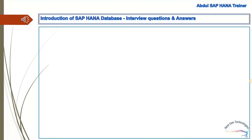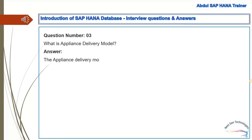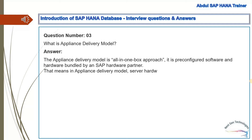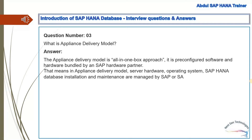Question 3: What is the appliance delivery model? Answer: The appliance delivery model is an all-in-one-box approach. It is pre-configured software and hardware bundled by an SAP hardware partner. In the appliance delivery model, server hardware, operating system, SAP HANA database installation and maintenance are all managed by SAP or an SAP vendor or partner.